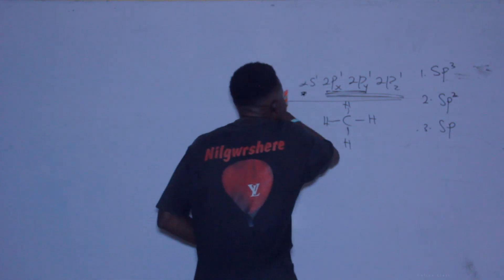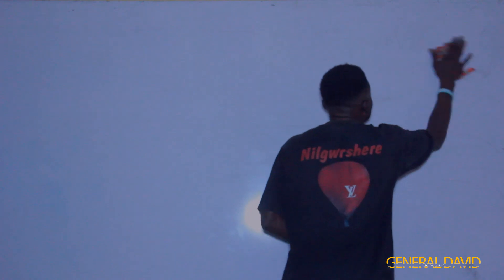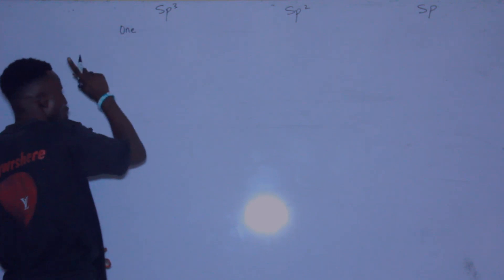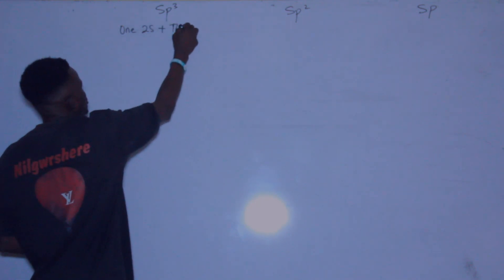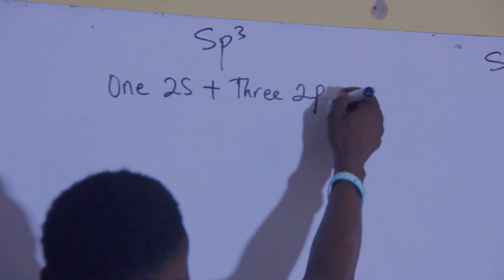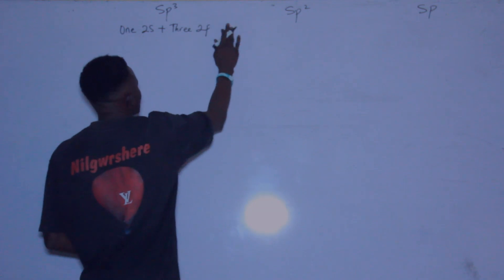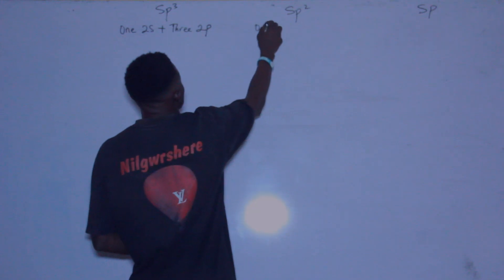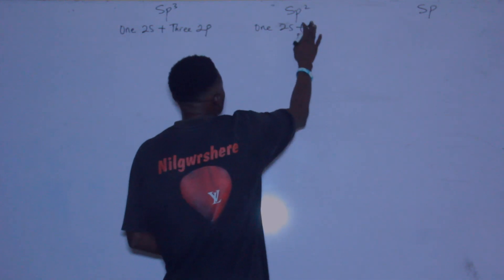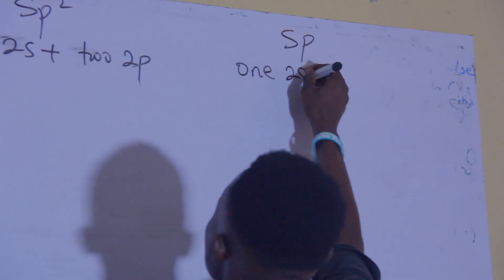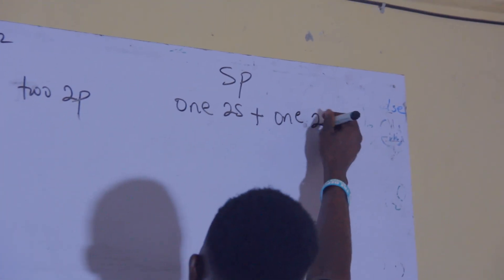Let me differentiate between sp³, sp², and sp hybridization. The sp³ hybridization is a mixing or blending of 1 2s orbital with 3 2p orbitals. The sp hybridization is a mixing or blending of 1 2s orbital with only 1 2p orbital. And the sp² is a mixing of 1 2s orbital with 2 2p orbitals.